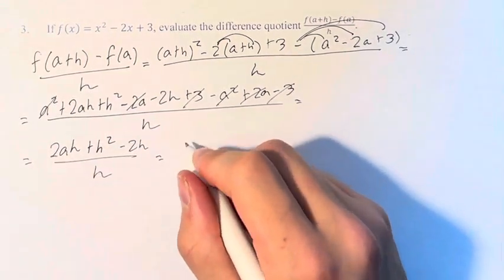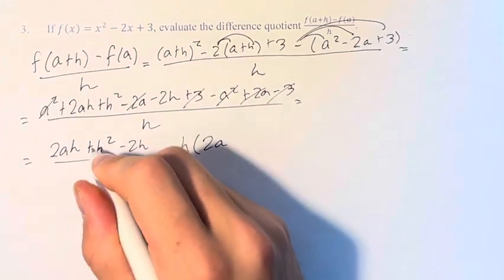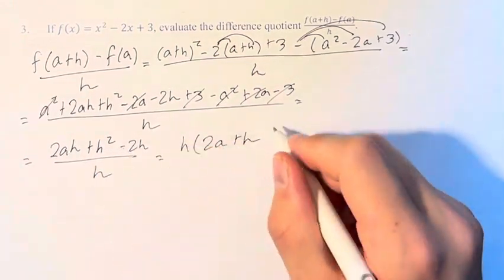We can factor an h out of the top. So we have h times, factoring this out as 2a, h is left behind, minus 2.